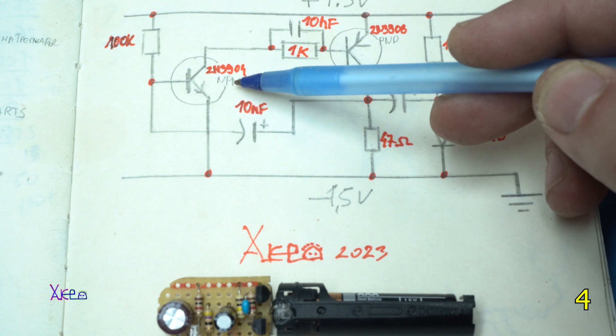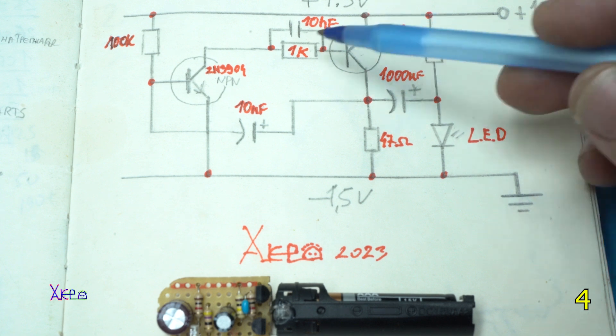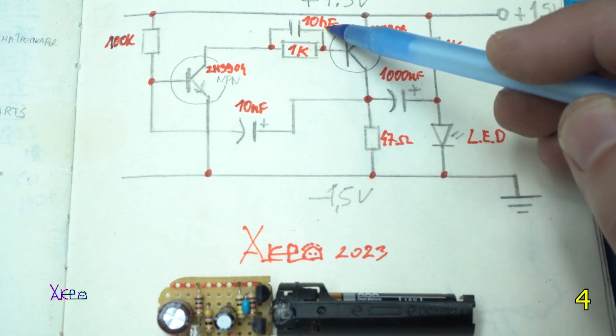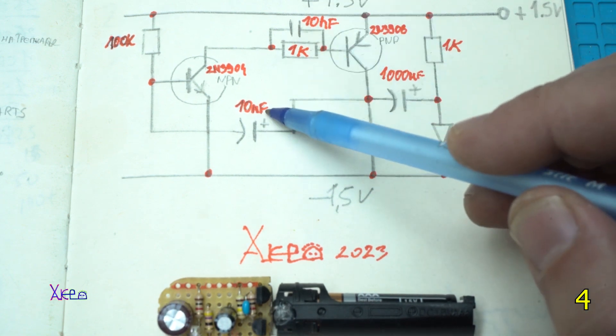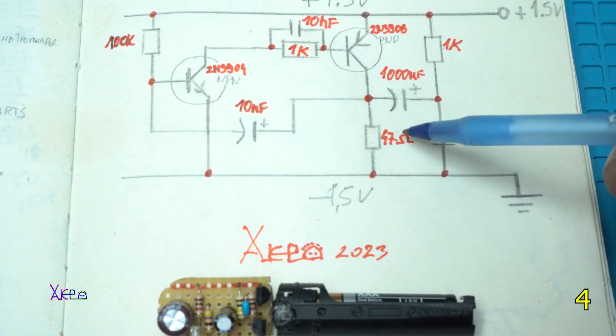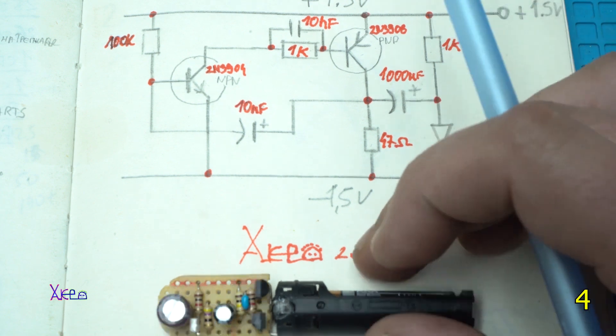One NPN transistor, any NPN transistor. In my case I am using 2N3904 and PNP transistor 2N3906. We have 2K ohm resistor, 100K ohm resistor, 10nF capacitor, 10uF electrolytic capacitor. Here we have 47 ohms resistor, the LED. And this is the crucial electronic part: 1000uF at 6.3 volts.